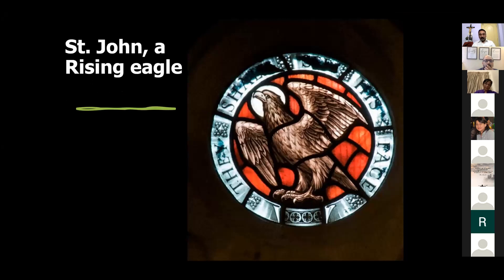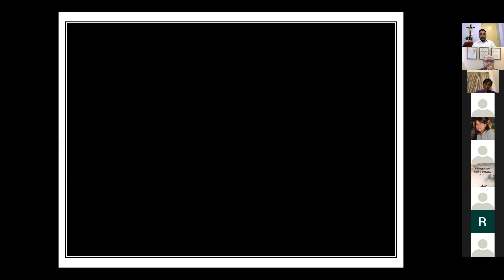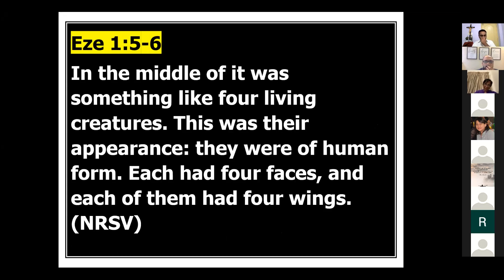Then we had John, symbolized by a flying eagle. John's audience was the church of Ephesus. The flying eagle symbolizes that he sees everyone from a spiritual angle — from above, he sees everything and writes his gospel.